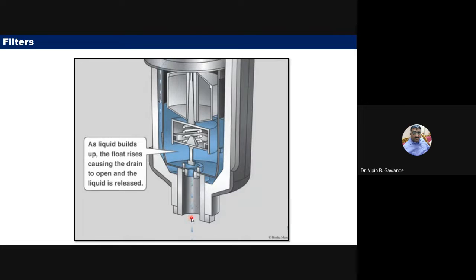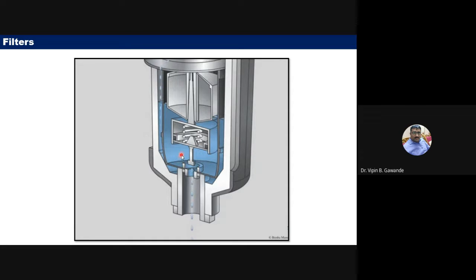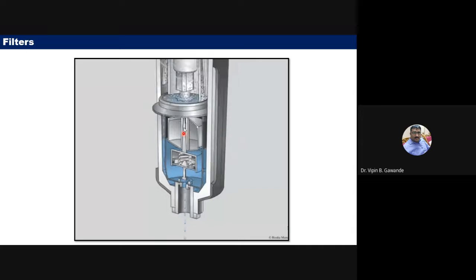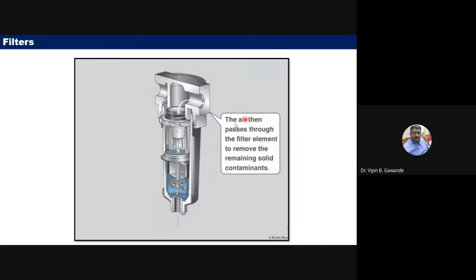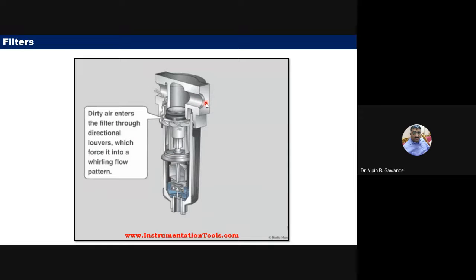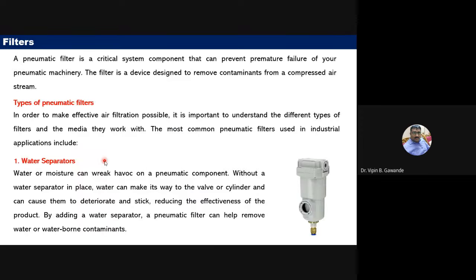The moisture is thus removed, and the clean compressed air exits through the outlet into the pneumatic system. This is the working principle of the first type of filter — the water separator.